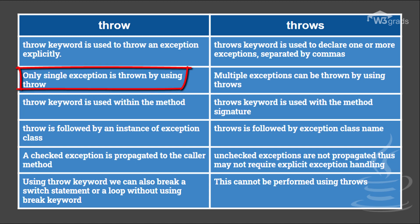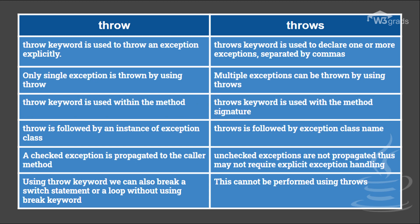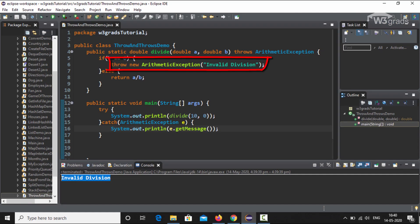The second difference: only a single exception is thrown at a time using throw, whereas multiple exceptions can be declared using throws, separated by commas. The third difference: the throw keyword is used within the method body, while the throws keyword is used with the method signature. The fourth difference: throw is followed by an instance of an exception class — such as new ArithmeticException — while throws is followed by the exception class name directly, such as ArithmeticException.